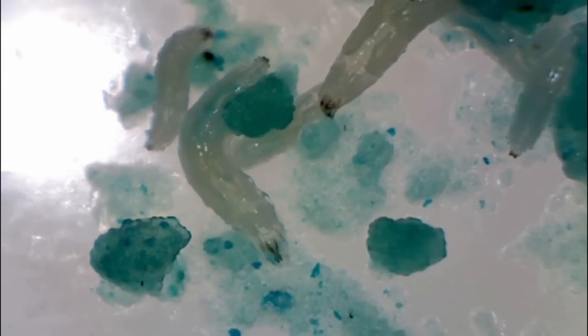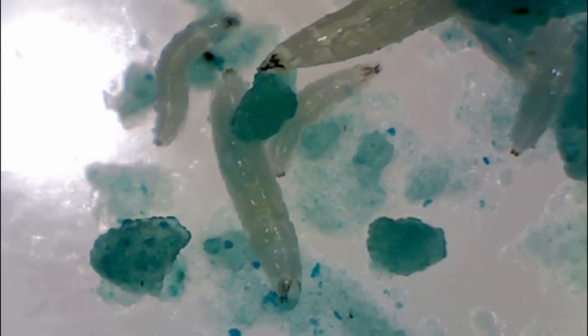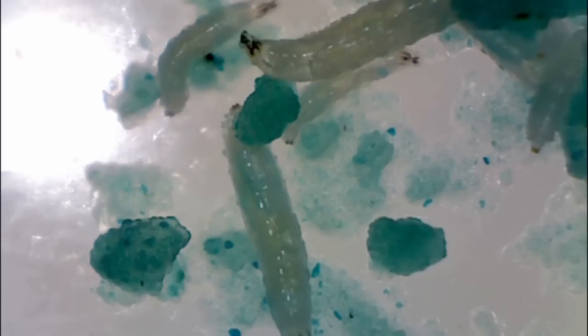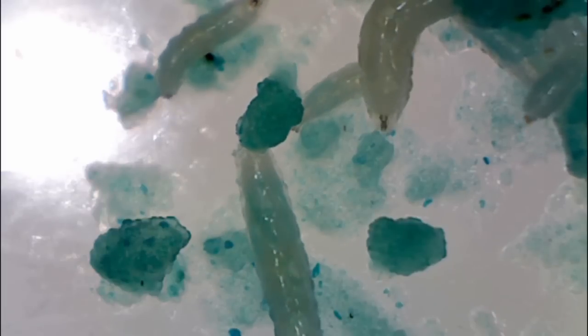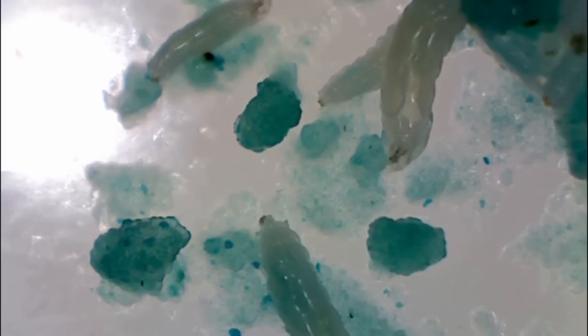The larva grows rapidly. As you can see, they are voracious foragers. The media they are eating is colored blue, making it easier to see the larva.